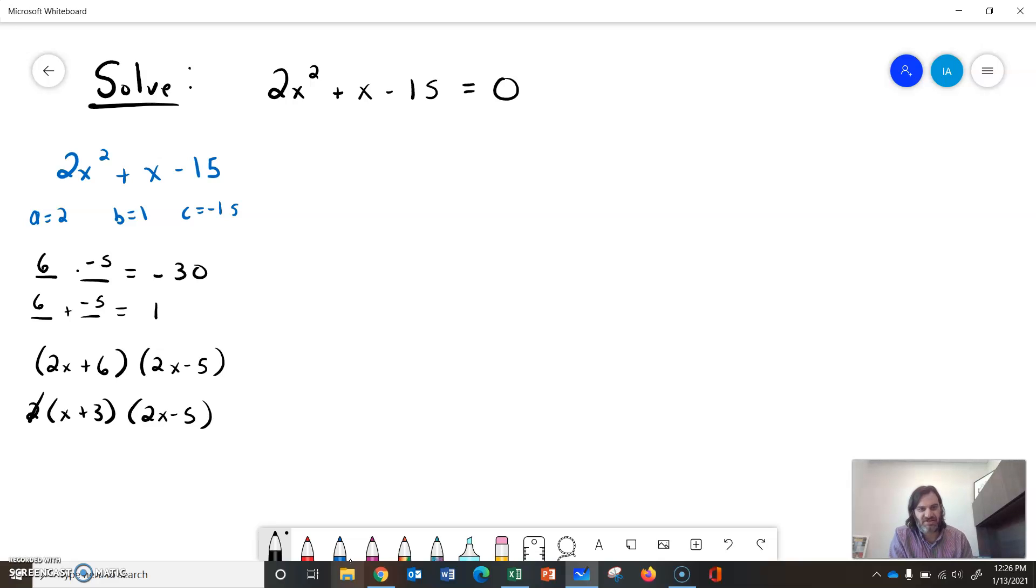So our original equation, 2x squared plus x minus 15 equals 0, can be rewritten as, let's use a different color here, x plus 3 times 2x minus 5 equals 0, and you can always fold that back out and check the factoring process if you like.